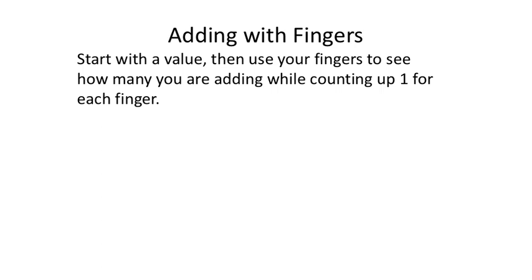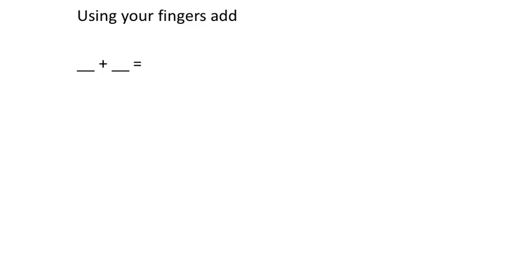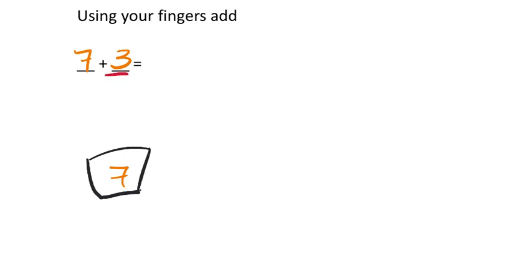When you use your fingers, you see how many you are adding while counting up one for each finger. Let's use seven and three. I would start with seven and then for every finger I put up, that's one more — but I've got to get three more fingers up. So starting at seven: eight, nine, ten. There's two fingers and then a third finger makes ten. So the final answer is ten.